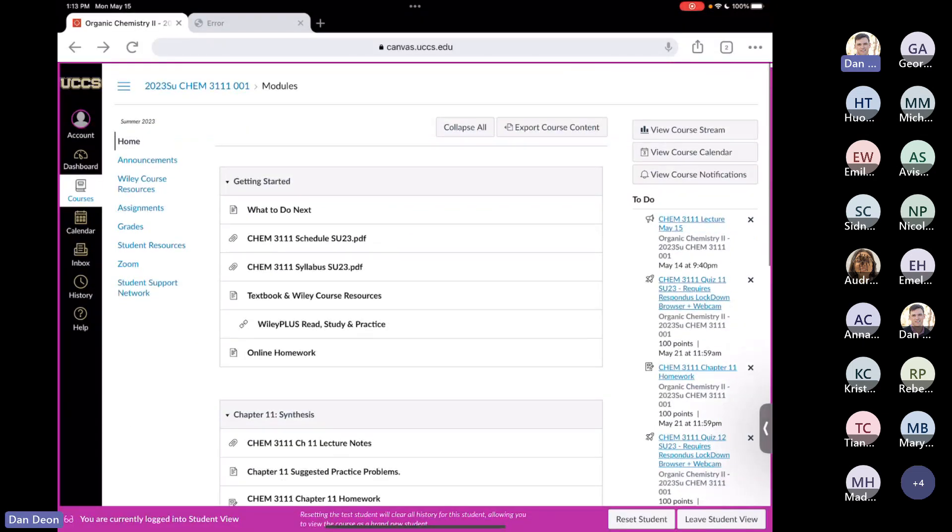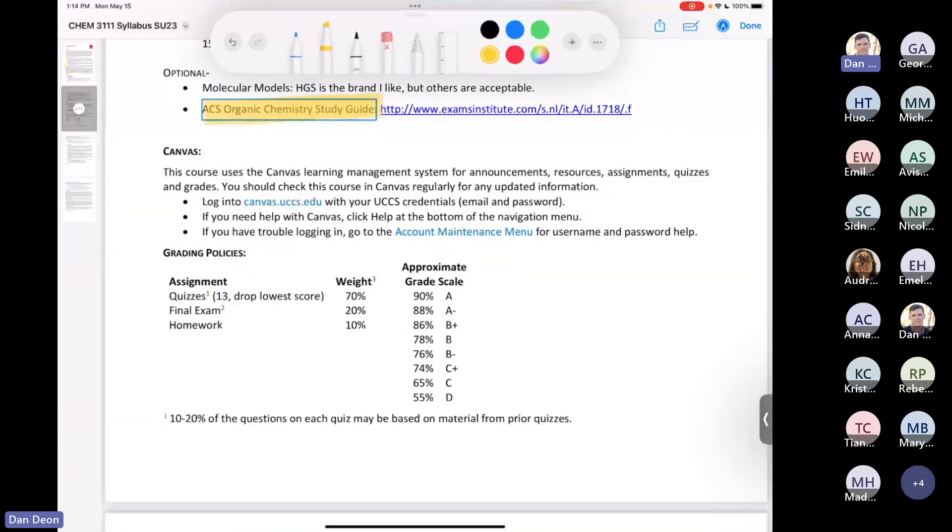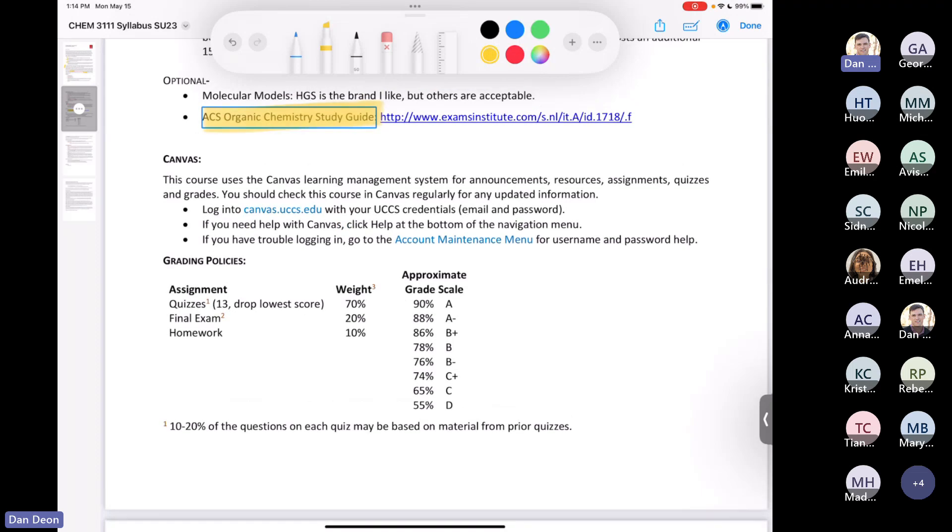Let's not worry about the ACS final today. We'll talk about that more once we get closer to it. So let's go back here. So as far as your assignment grades, most of your grades are going to come from the quizzes, and we have 13 quizzes. I'll drop your lowest score. You get 70% of your grade from the quizzes, only 20% from the final, and then the homework is 10%. I have the approximate grade scale here. And then, you know, a big point of contention sometimes with some people is the lowest score. So I will drop your lowest score.